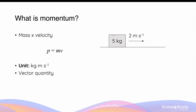For example, suppose we have a 5 kilogram mass moving horizontally to the right with a velocity of 2 meters per second. The momentum of this object is simply given by its mass multiplied by its velocity, which equals 10 kilograms meters per second to the right.